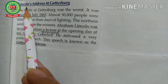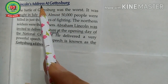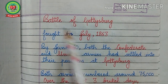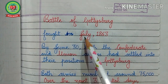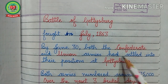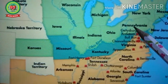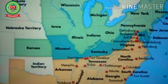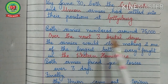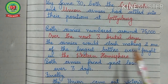Now let us discuss the next topic — Lincoln's Address at Gettysburg. But first we must know about the Battle of Gettysburg. The Battle of Gettysburg was fought in July 1863. By June 30, both the Confederate and Union armies had settled into their positions at Gettysburg, which is in Pennsylvania, United States of America. Both armies numbered around 75,000.